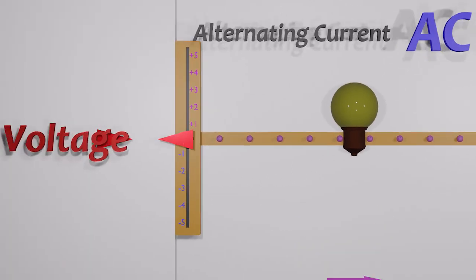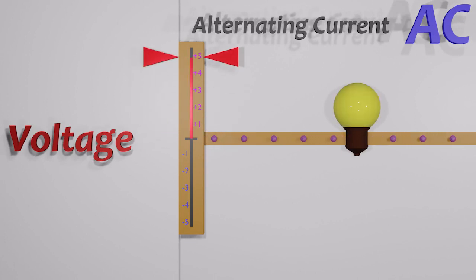Pay attention to the voltage at one end. It goes up and then comes to zero. And goes down and again becomes zero. This cycle repeats again and again.